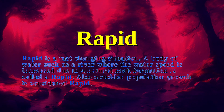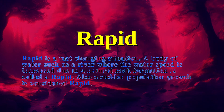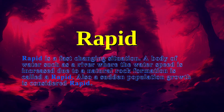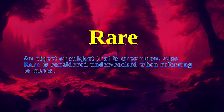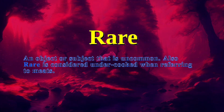Rapid: A fast-changing situation. A body of water, such as a river, where the water speed is increased due to a natural rock formation, is called a rapid. Also, a sudden population growth is considered rapid. Rare: An object or subject that is uncommon. Also, rare is considered undercooked when referring to meats.